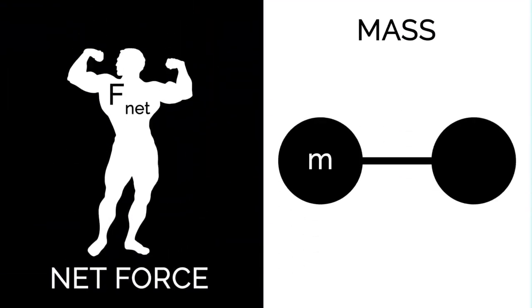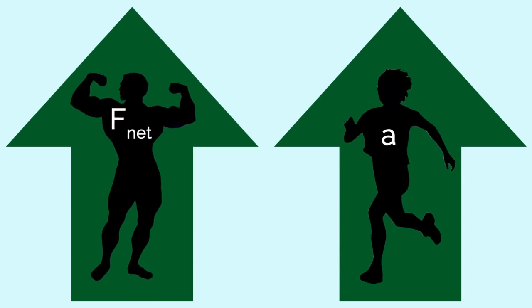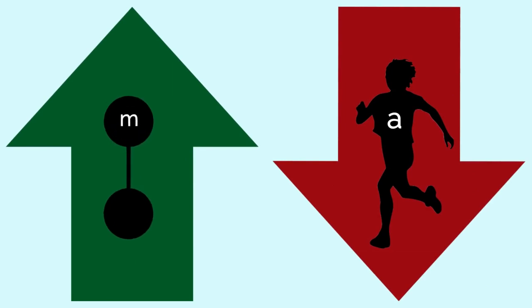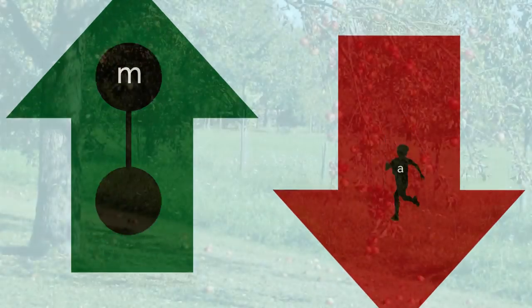The Second Law is dependent on two variables: the net force in action and the object's mass. As the force increases, so does the object's acceleration, and vice versa. Also, as the object's mass increases, the acceleration decreases, and vice versa.